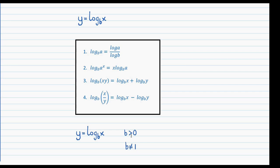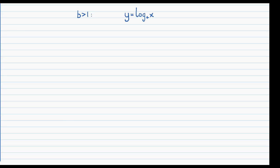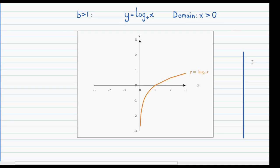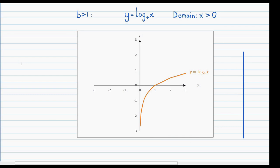We've already seen what exponential function graphs look like, but we haven't seen what a logarithmic graph looks like or whether it can be considered a function. Similarly to how you get different exponential graphs depending on the value of b, the shape of the log graphs also depends on b. The first case is for b greater than 1 — let's take b as 4, giving the equation y equals log x base 4. The domain of this graph is x greater than 0 because you can't have the log of a negative number.